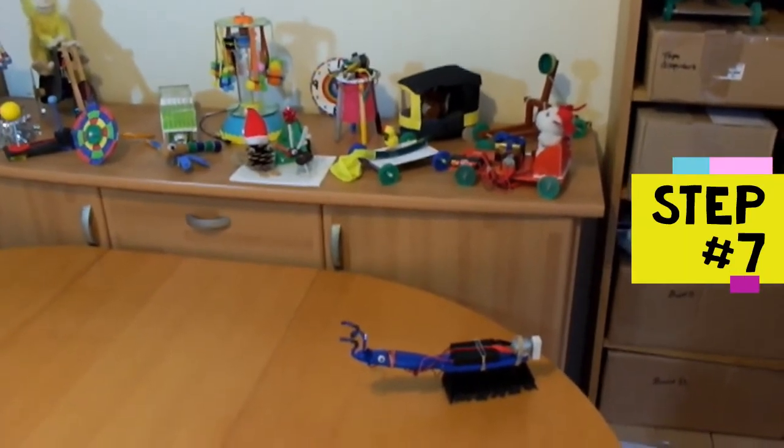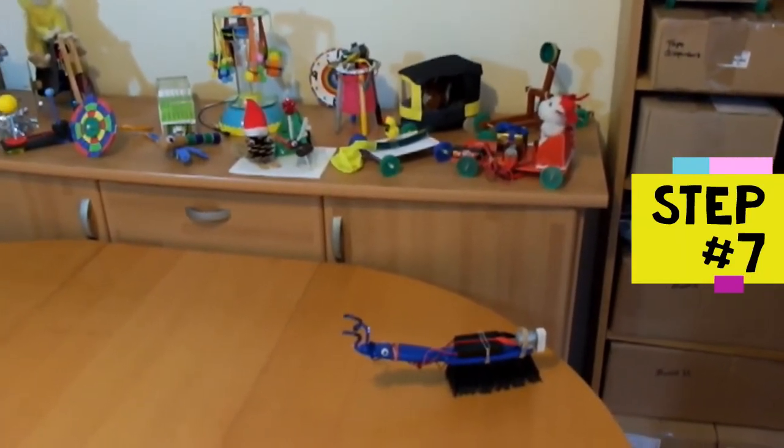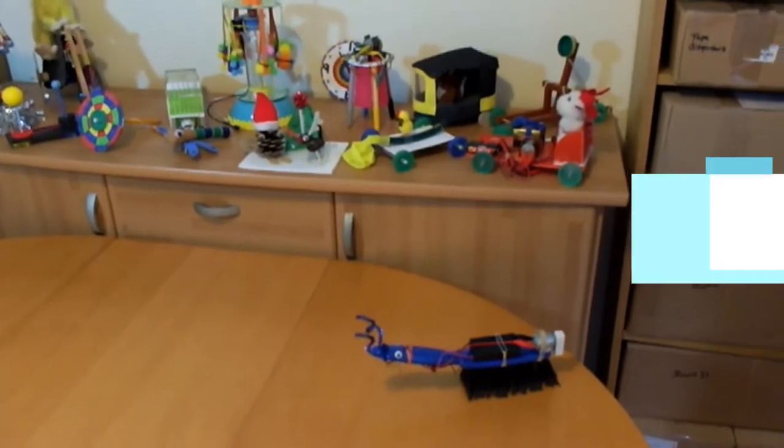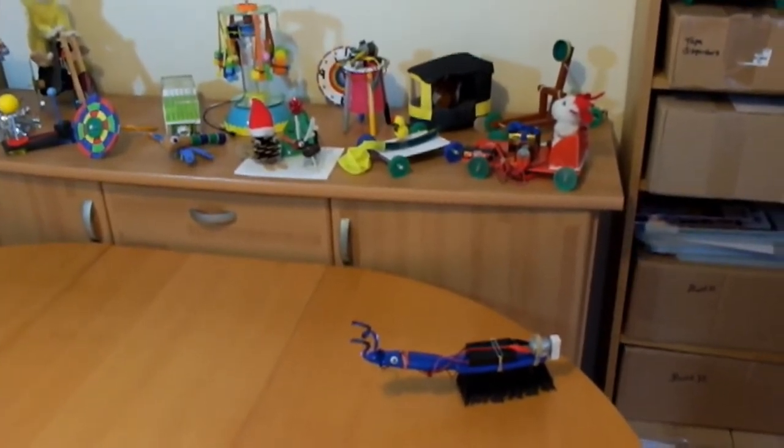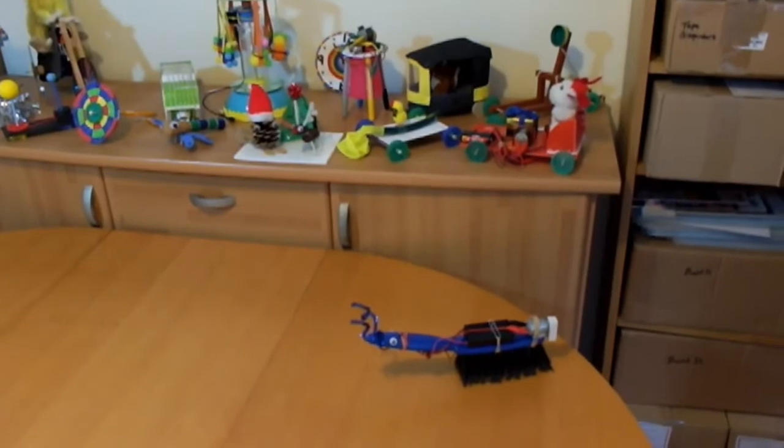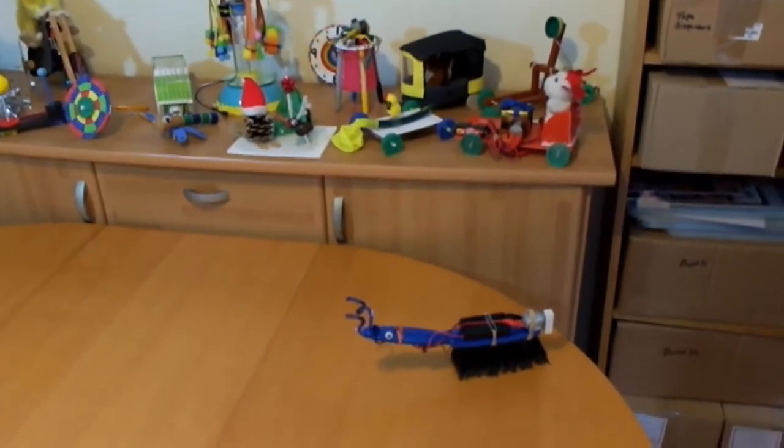Step seven is to try out the brush monster. Place the brush monster on a smooth table to switch on. Be ready to catch it if it falls off the table. How does it move? Does it go in a straight line or round in circles? You can give it a push to see what it does.